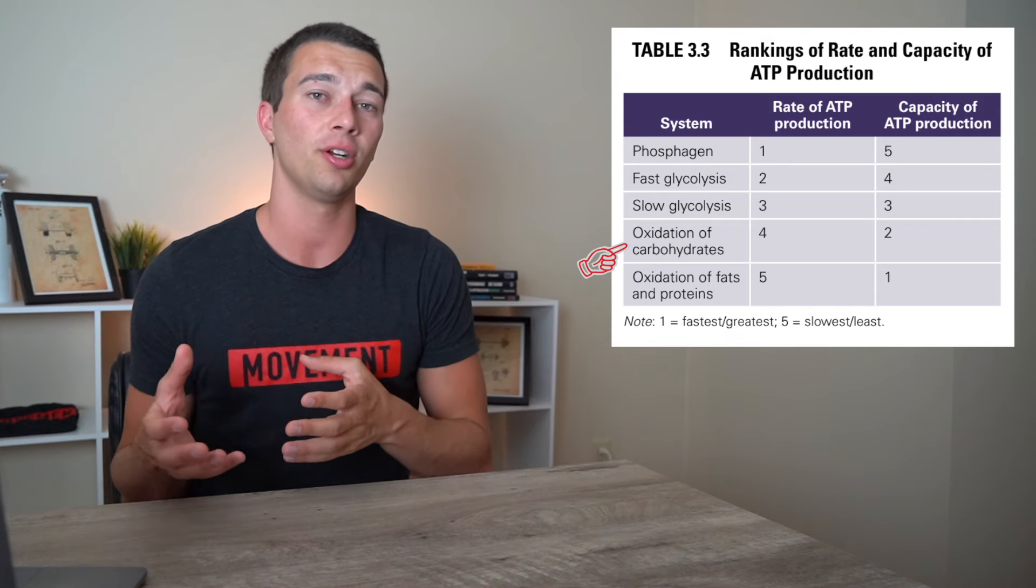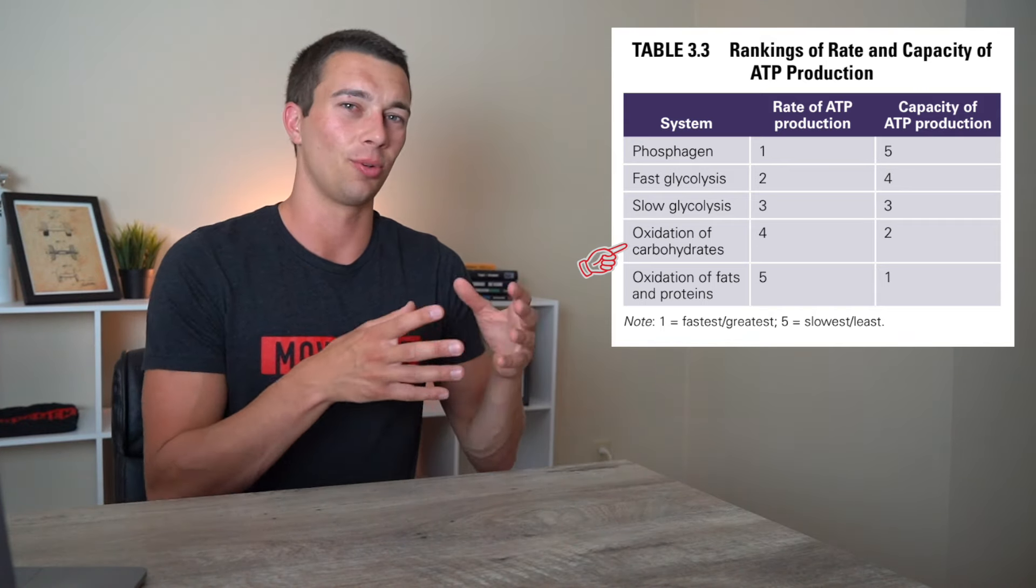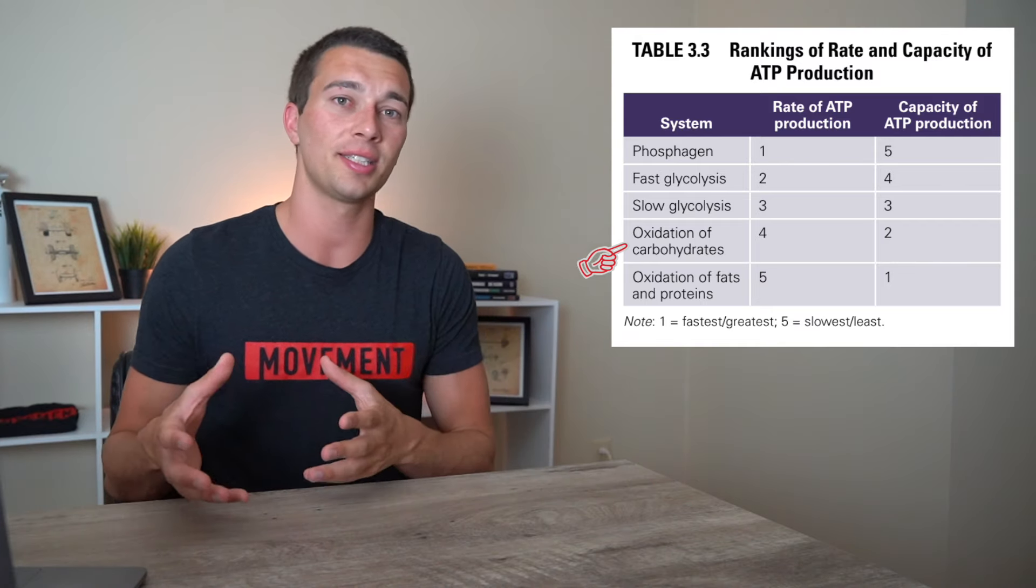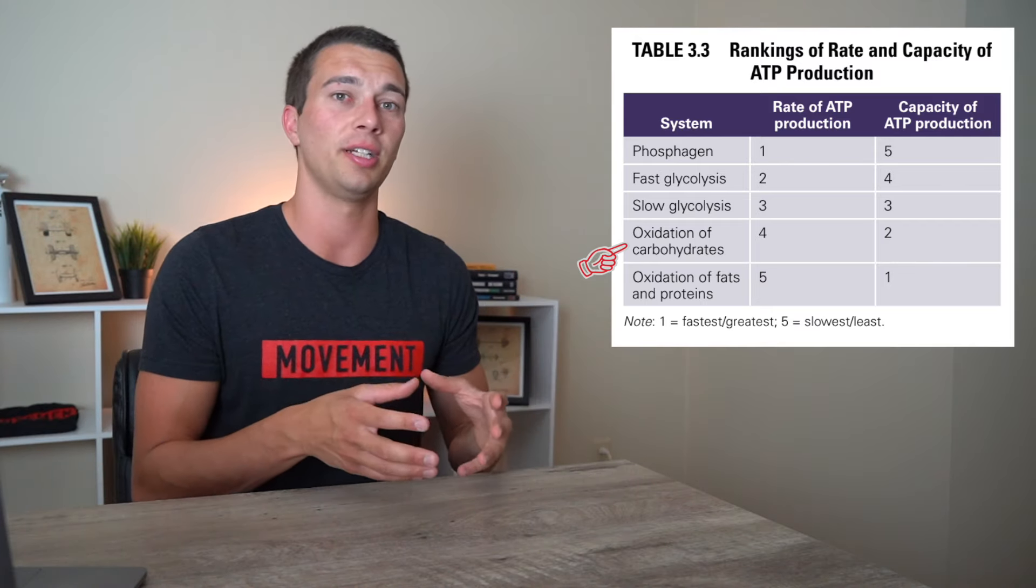Whereas if you're just doing glycolysis and you're ending at lactate, you're really only getting two net ATP. So the amount is much greater than 38, but the rate is actually much less because it takes more time to fully oxidize than it does to just turn it right into lactate quick.